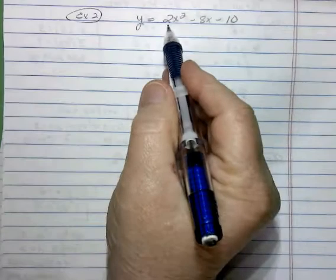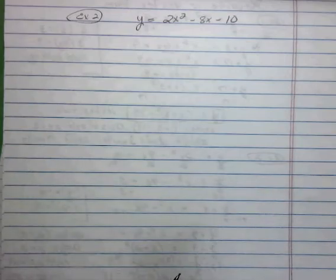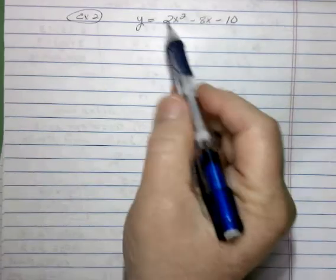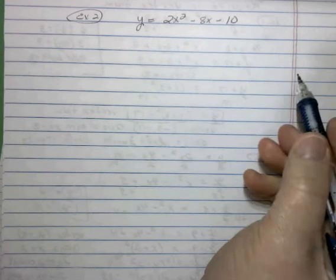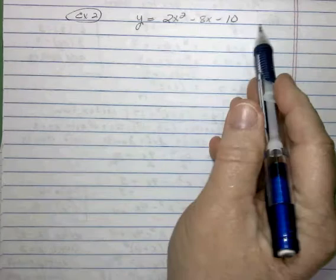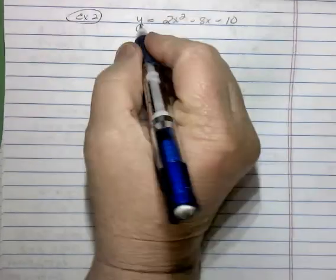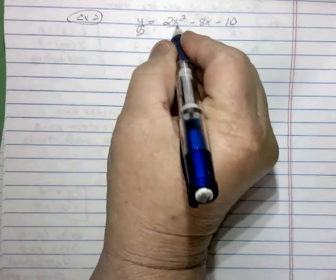You'll notice in this example we have a leading coefficient in front of the x squared term. In this case, we want to first get rid of that value. So in order to do that, we're going to divide everything by that value. So we're dividing everything by 2.